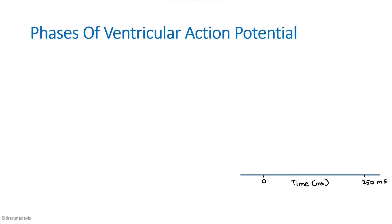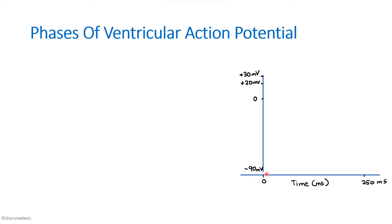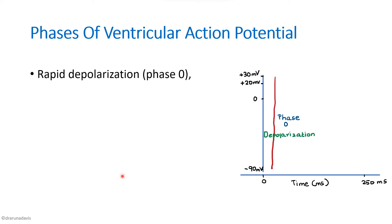To draw the graph, plot time on the x-axis — the normal duration is around 220 milliseconds, so draw from 0 to 220 milliseconds. On the y-axis, write the normal range of potential changes, from minus 90 to around plus 30 millivolts.